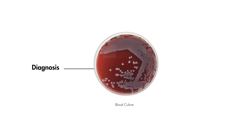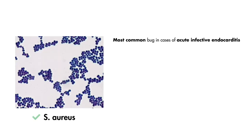The diagnosis of endocarditis is typically confirmed by blood cultures, which also determines bacterial antibiotic sensitivity. Staphylococcus aureus is the most common bug in cases of acute infective endocarditis, especially in cases where the patient is an intravenous drug user.